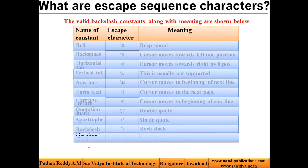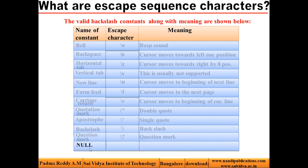Look at the next one: question mark. It is denoted by \? (backslash followed by question mark). When printed using printf function, we get a question mark on the screen. The last one is null character. It is denoted by \0 (backslash zero). We call it the null character. Now we have seen what are escape sequence characters available in C language.